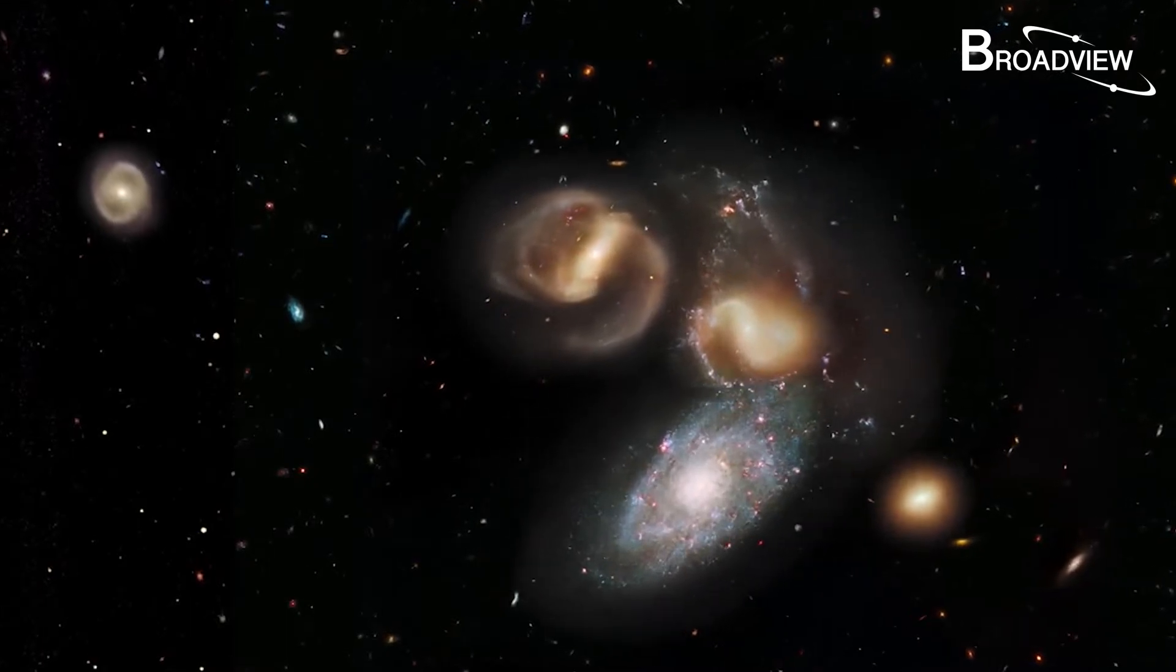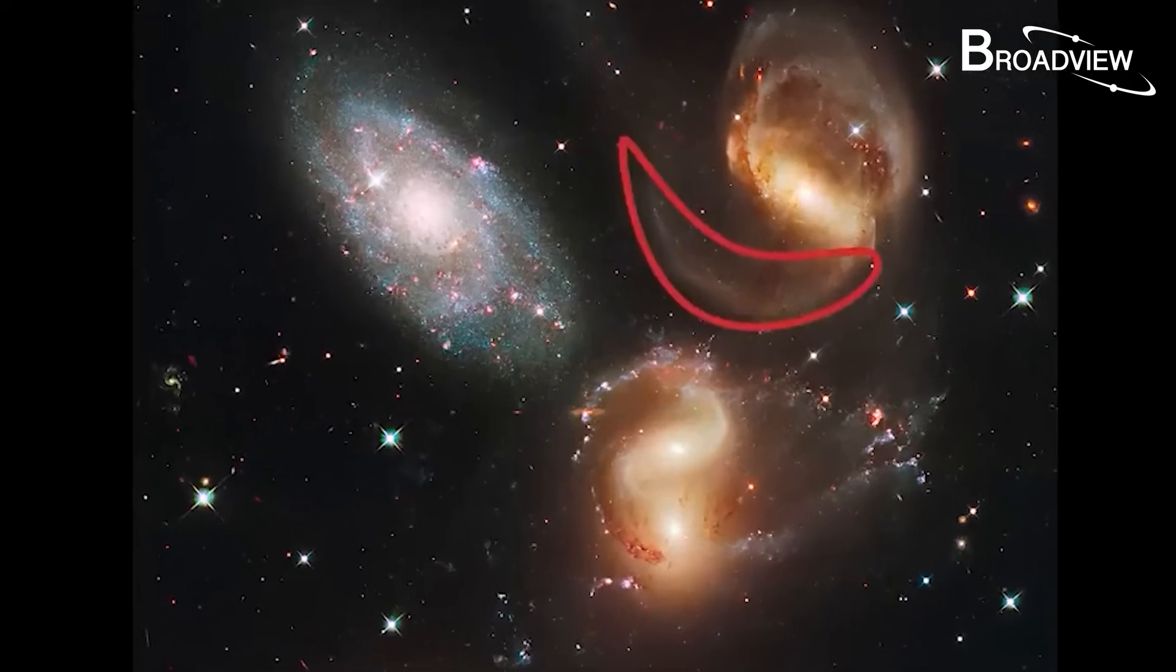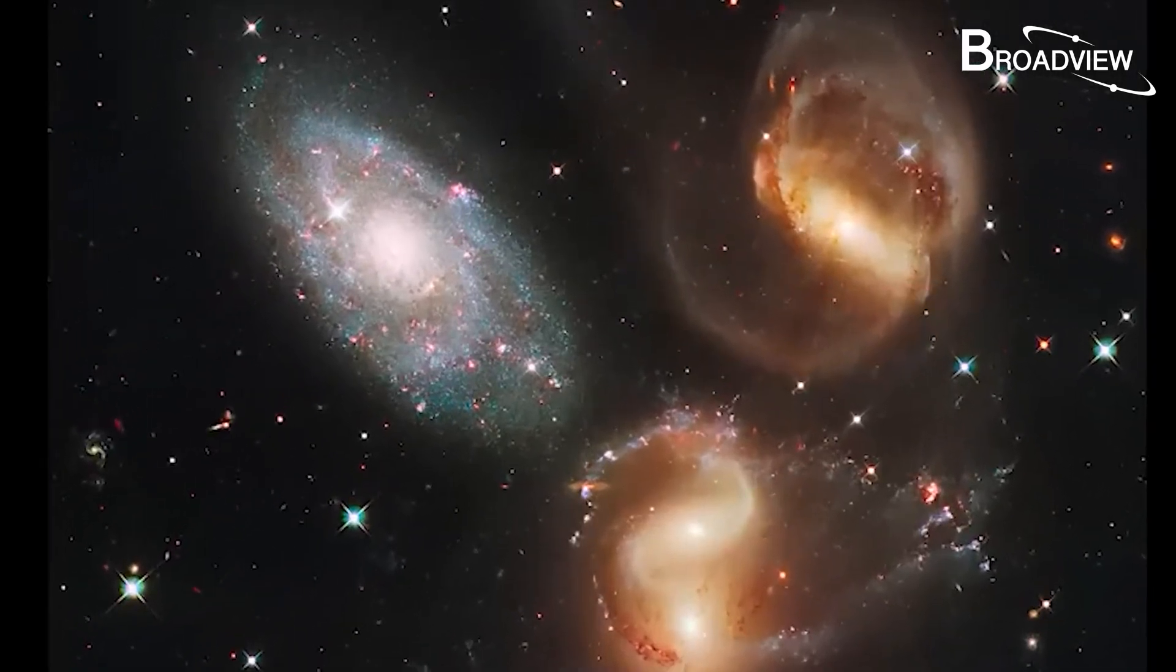First, let's take a look at this area of galaxies 290 million light years away from Earth, called Stephan's Quintet. Four of the galaxies collided with each other under the action of their own gravity. Some at the center of the battlefield even generated an impressive tail after the collision.